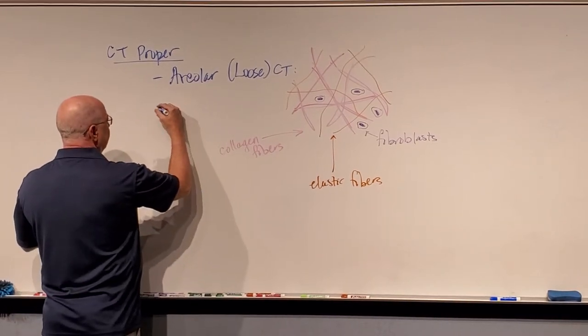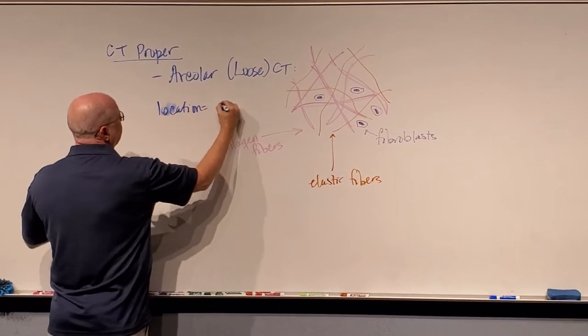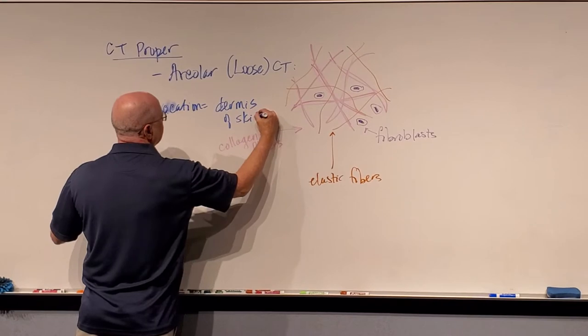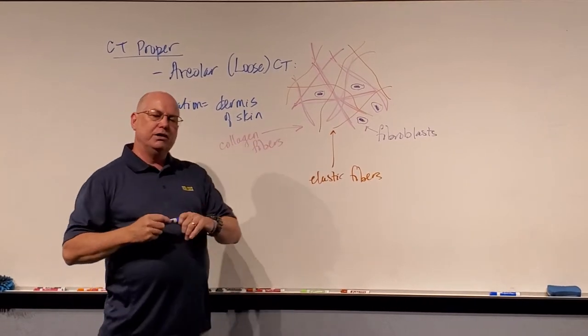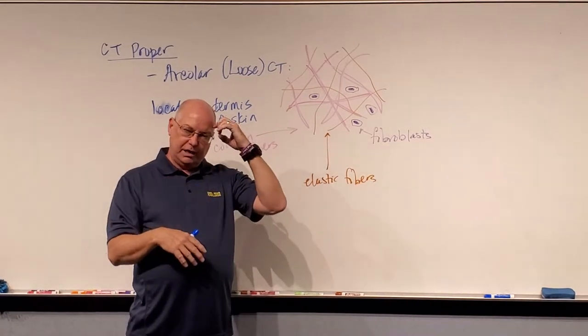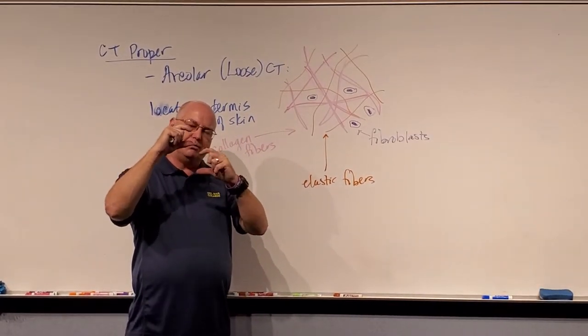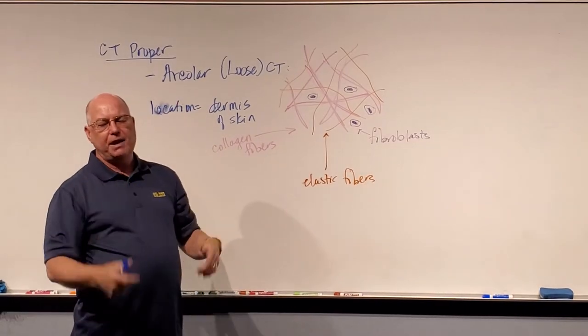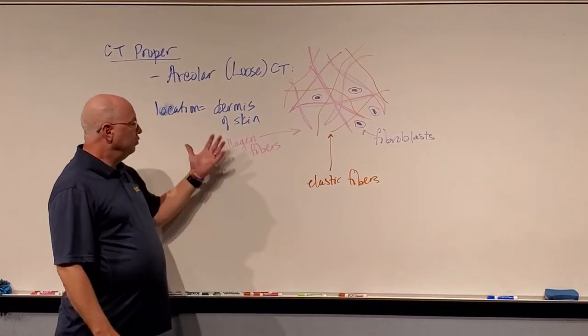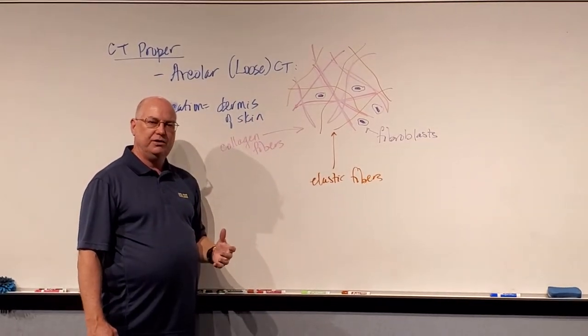The location for this tissue is found in the dermis of the skin. When we learn the skin, we're going to learn that there's the epidermis, the dermis, and another layer called the hypodermis. The dermis is actually made up of a couple of layers: a reticular layer and a papillary layer. One of those layers of the dermis is filled with loose connective tissue or areolar connective tissue. That makes our skin very flexible.